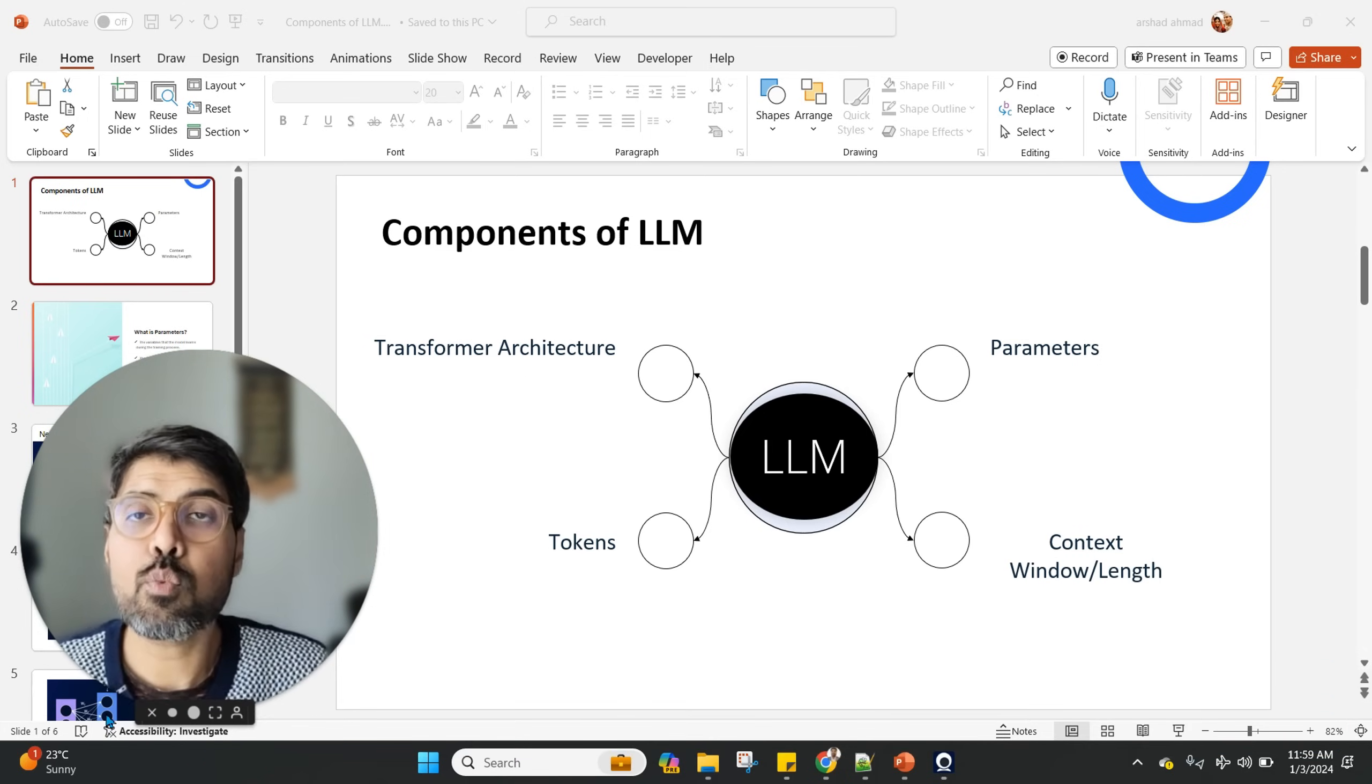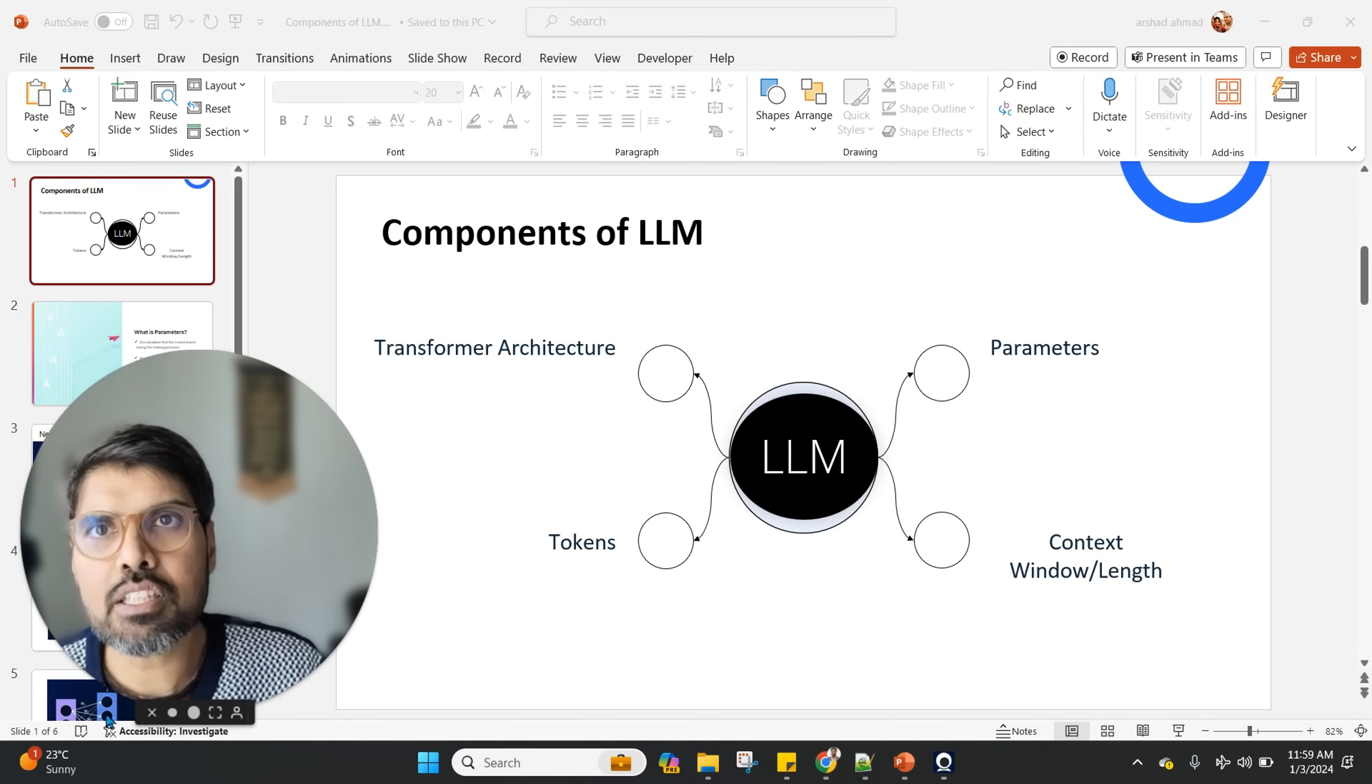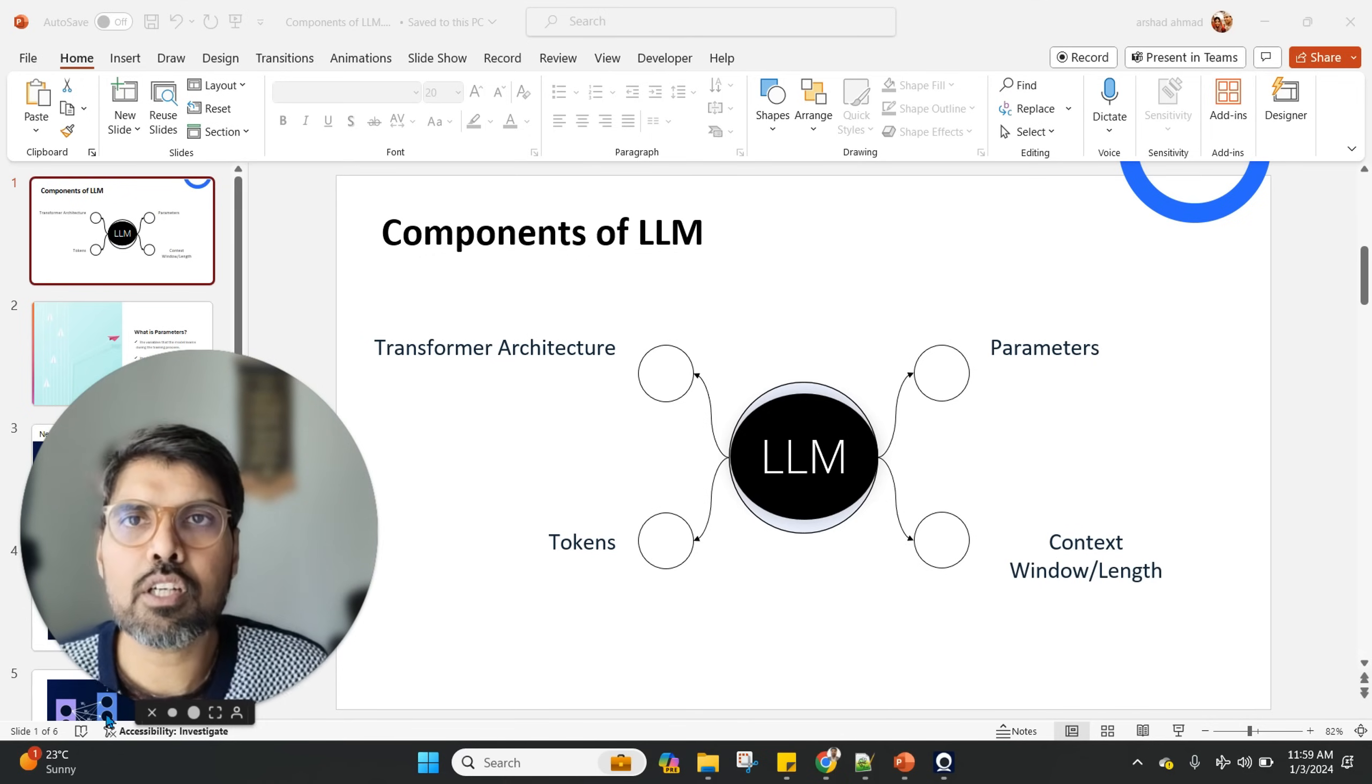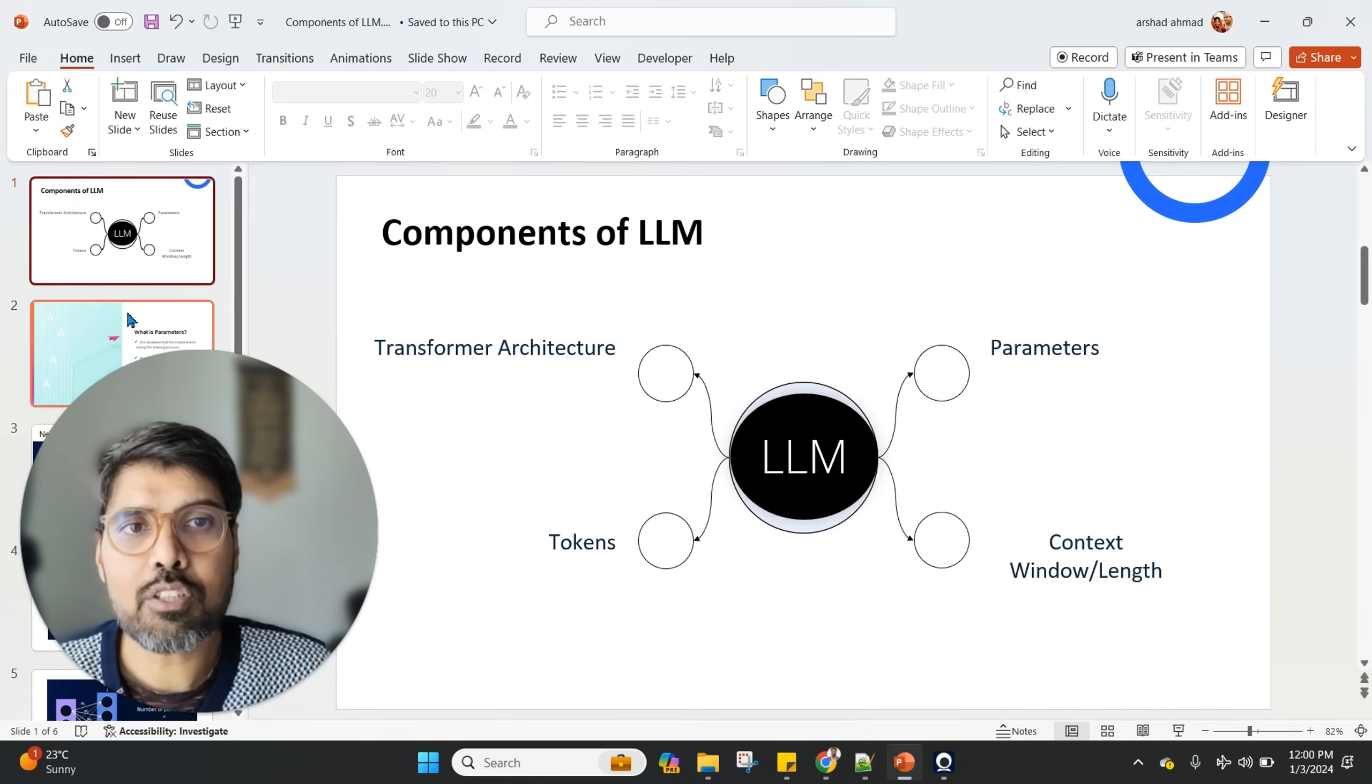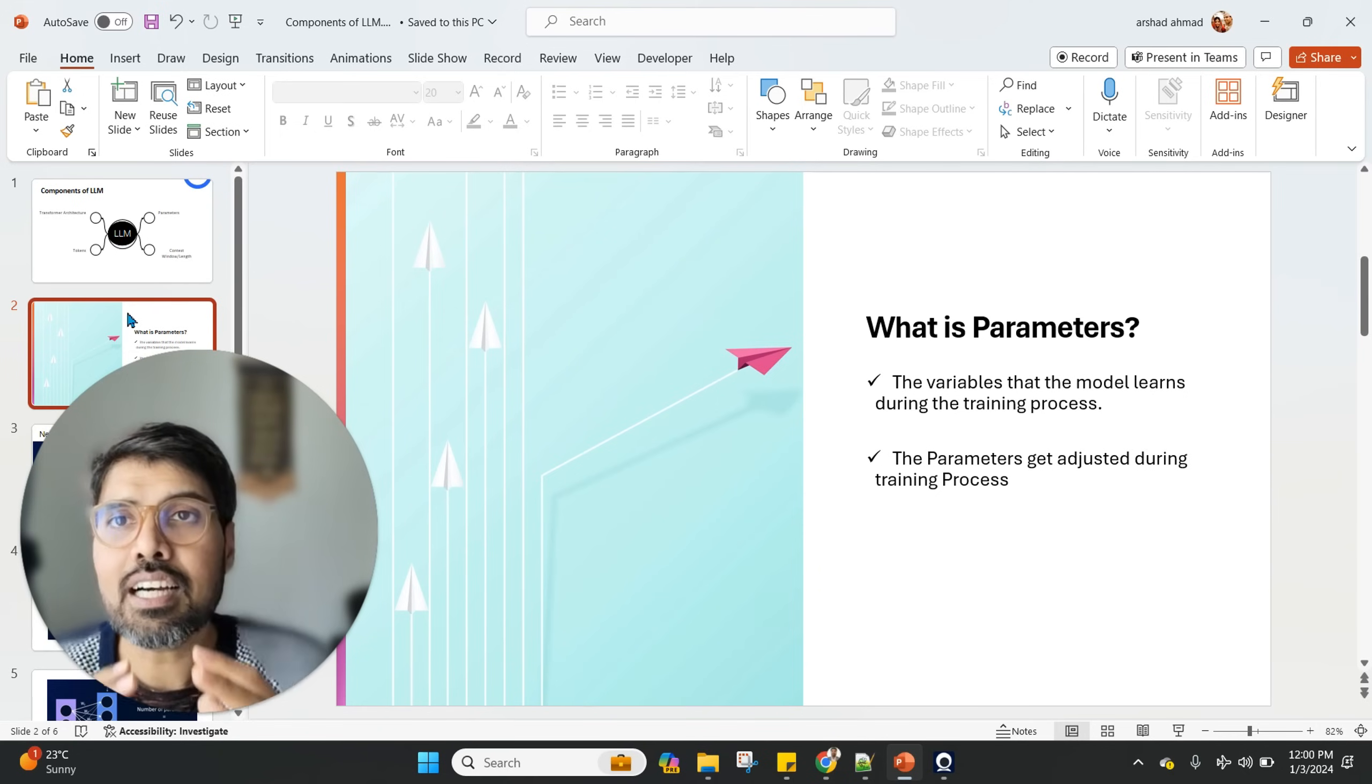Like GPT-3 has 175 billion parameters, Llama2, the biggest of the Llama, has 70 billion parameters. What is this 70 billion parameters? Parameters are the variables that the model learns during the training process, and they get adjusted during the training process.